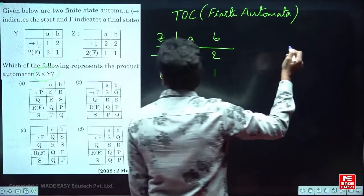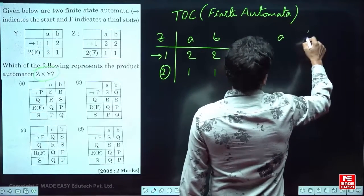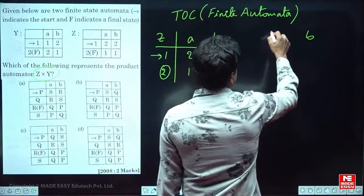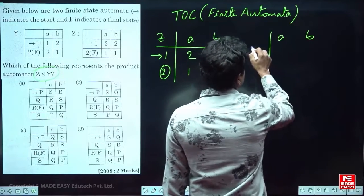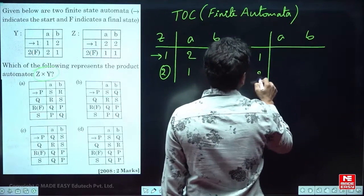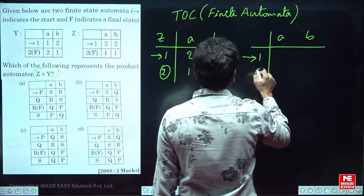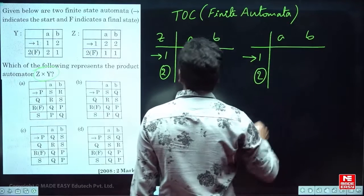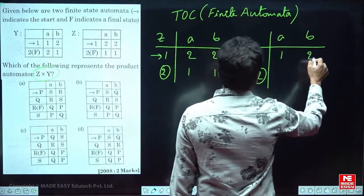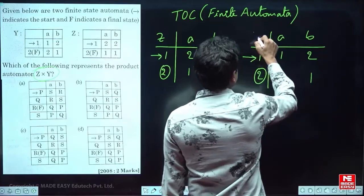Then I write Y. Y has input symbols A and B. States 1 and 2 — 1 is the initial state and 2 is the final state. So this is Y.